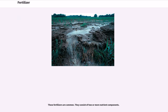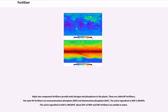Multi-component fertilizers are common. They consist of two or more nutrient components. Major two-component fertilizers provide both nitrogen and phosphorus to the plants — these are called NP fertilizers. The main NP fertilizers are monoammonium phosphate (MAP) and diammonium phosphate (DAP). The active ingredient in MAP is NH₄H₂PO₄. The active ingredient in DAP is (NH₄)₂HPO₄. About 85% of MAP and DAP fertilizers are soluble in water.